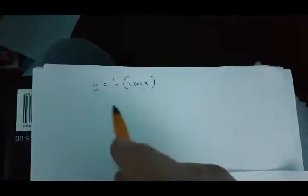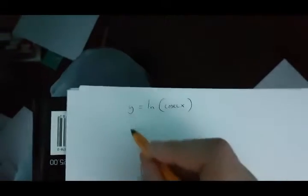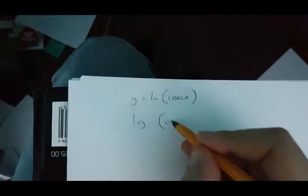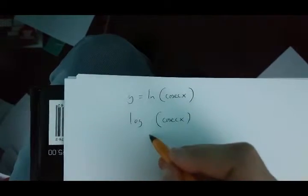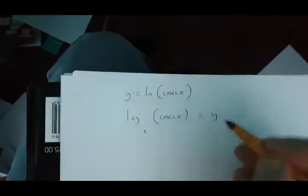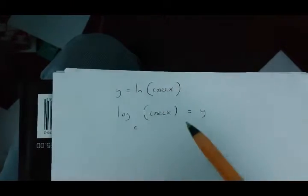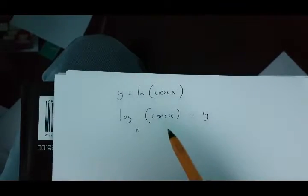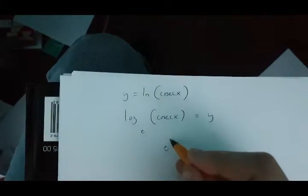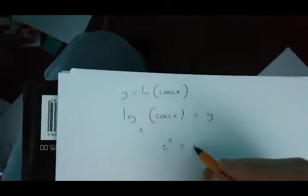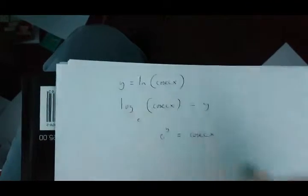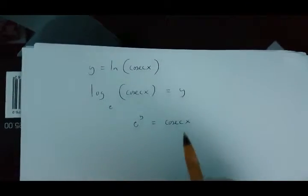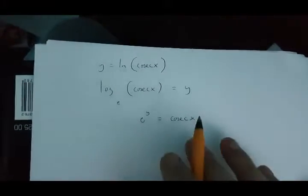Now, I'm going to begin differentiating this by saying that log cosec x to the base e is equal to y. This is because this and this are the same. Now, if this is true, then e to the power of y is going to be equal to cosec x.